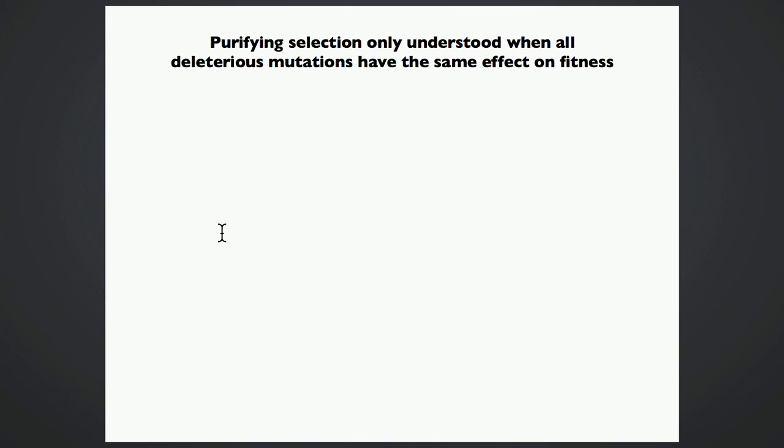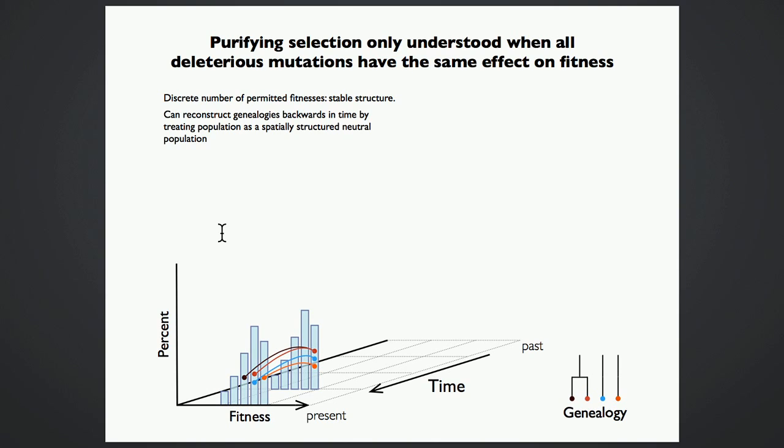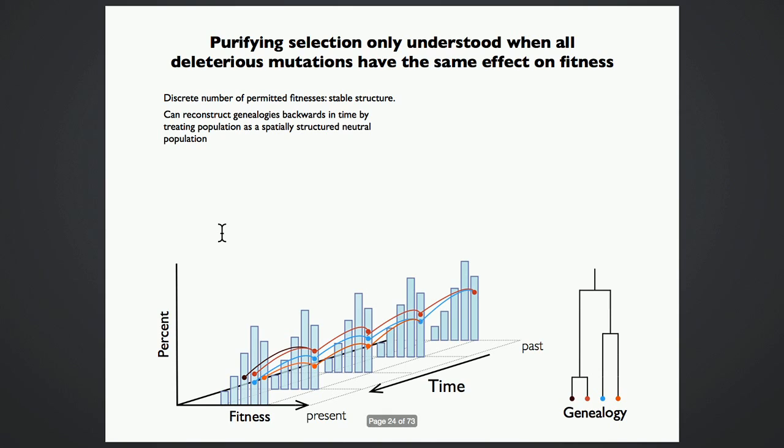So this theoretical confounder has long been recognized as important, and currently we understand it well in scenarios where all mutations have the same effect on fitness. And the reason this case is easier to understand than others is whenever all mutations have the same effect on fitness, then there's only a discrete number of fitnesses that any individual can have. And so what this leads to in practice is there being a stable structure in time. And so we can treat this case by making an analogy between our selected population and a spatially structured neutral population in which the different fitness classes correspond to demes, and the mutation events are thought of as migrations to reconstruct these genealogies. And once we do have a genealogy, we scatter mutations, neutral mutations along their branches and calculate any diversity statistic that you may like.